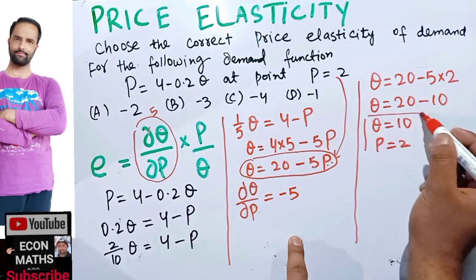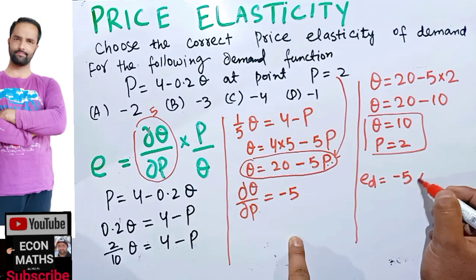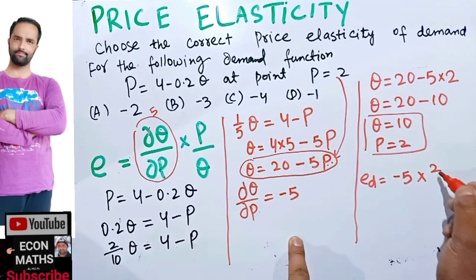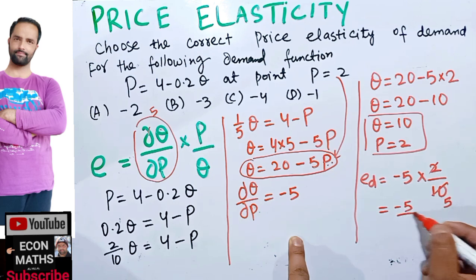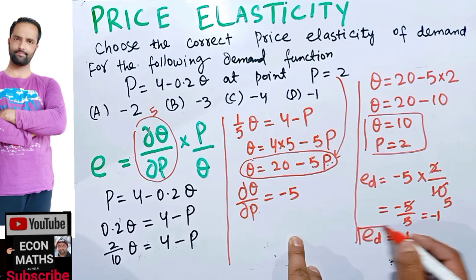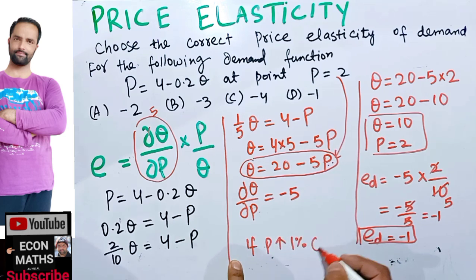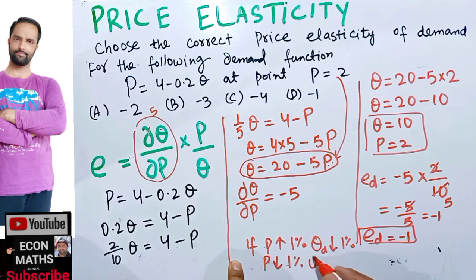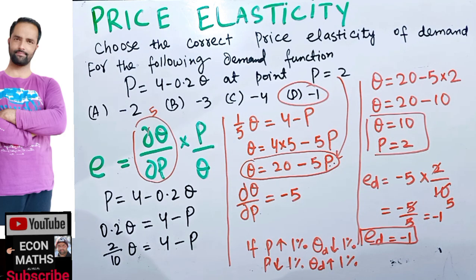The elasticity of demand equals dq upon dp, which is minus 5, multiplied by p upon q, that is 2 upon 10. This gives minus 5 times 2 over 10, which simplifies to minus 5 upon 5, so the elasticity of demand equals minus 1. This means if price increases by 1%, quantity demanded decreases by 1%, and vice versa. So the correct option is option D.